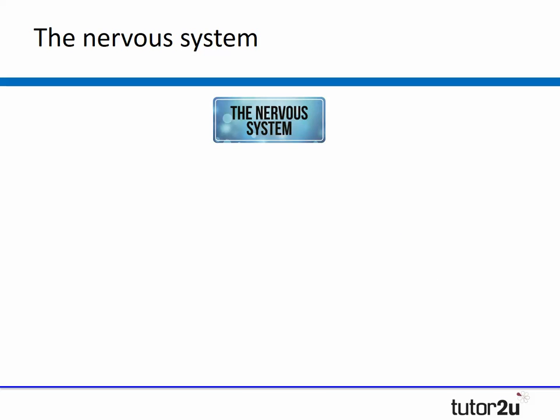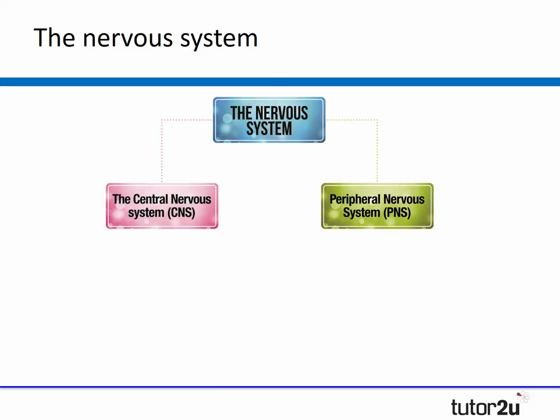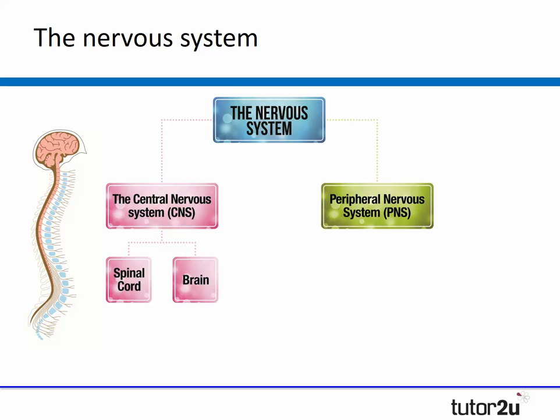To begin with, you need to be able to outline the structure of the nervous system, and the best way to understand the structure is simply to draw a diagram or a flow chart of it. The nervous system consists of two main components: the central nervous system and the peripheral nervous system. The central nervous system consists of both the spinal cord and the brain, and it's easy to remember because both run down the centre of the human body.